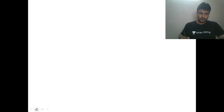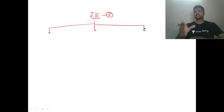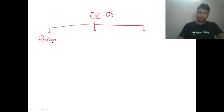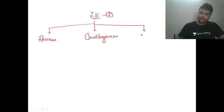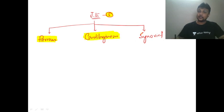As a medical student you should remember that we have three different types of joints. Start from the immovable and go towards the movable: the immovable joint is the fibrous joint, the partially movable joint is the cartilaginous joint, and the freely or completely movable joint is the synovial joint. These are the only three types.